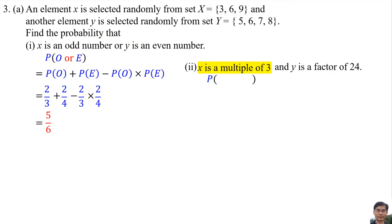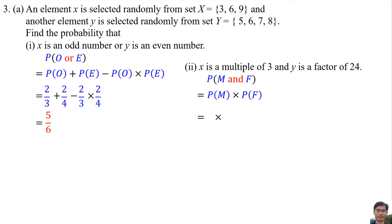Let X be the event of getting a multiple of 3, denoted M, and Y be the event of getting a factor of 24, denoted F. By using the formula, this equals P(M) × P(F). P(M) is 3 over 3: 3 because there are 3 multiples of 3 in set X, and 3 because there are 3 numbers in set X. P(F) is 2 over 4: 2 because there are 2 factors of 24 in set Y — they are 6 and 8 — and 4 because there are 4 numbers in set Y. Therefore, the answer is 1 over 2.